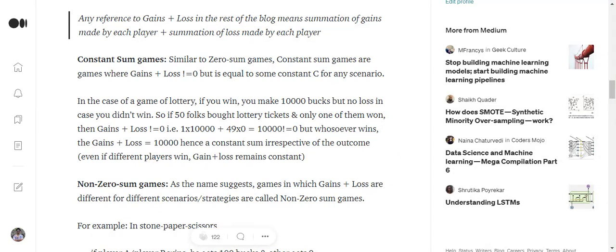The total gains plus total loss equals 1 times 10,000 plus 49 times 0, because 49 players get nothing. Eventually, the total summation of gains plus losses equals 10,000, which is not equal to zero but always equals to a constant c in each and every case.